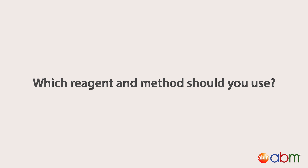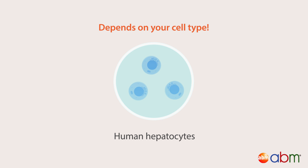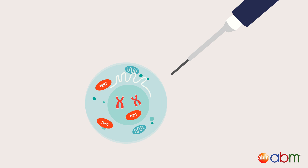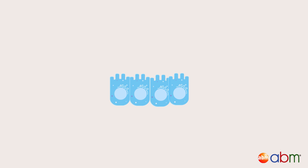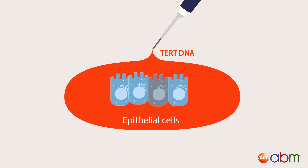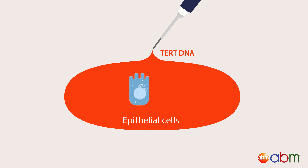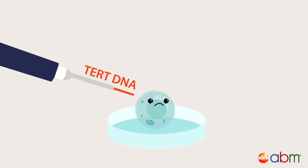Which reagent and method should you use? This depends on your specific cell type. Take primary human cells, for example — inserting the TERT gene is usually a good reagent to use, since the hTERT protein naturally occurs in human cells. However, overexpression of hTERT in some cell types, especially in epithelial cells, fails to induce cell immortalization and may induce cell death. Furthermore, hTERT alone does not always suffice.